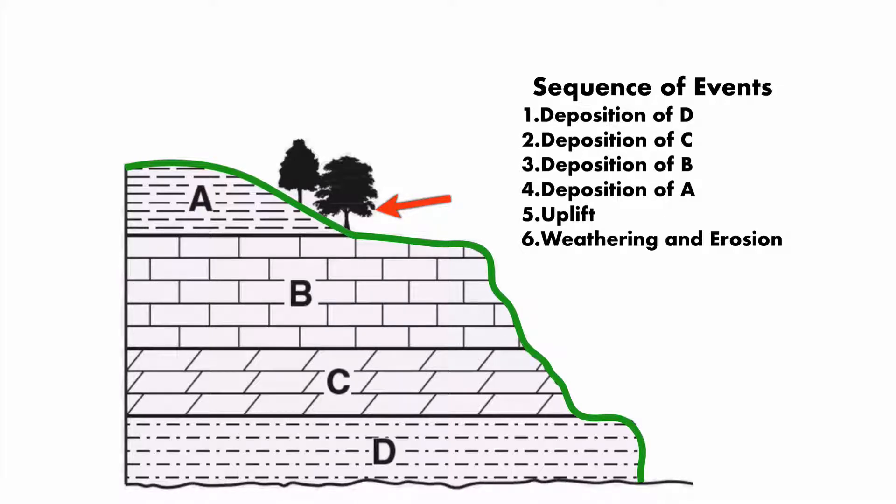So we know that that is something that happened once this got lifted out of the ocean. So that's a complete sequence of events, from the deposition of D all the way to the weathering and erosion. That would be something you would have to do, or be able to do, with a cross-section like this.